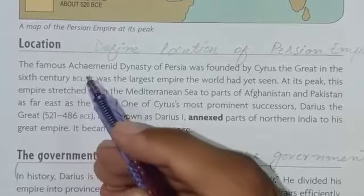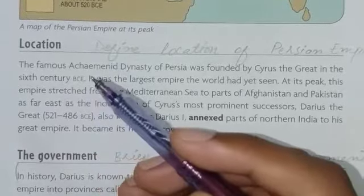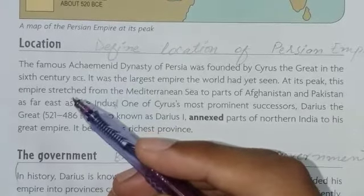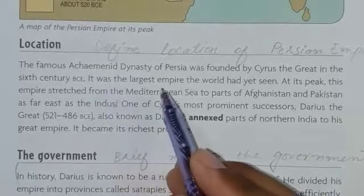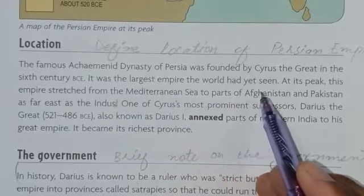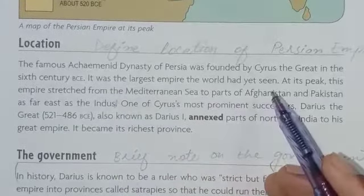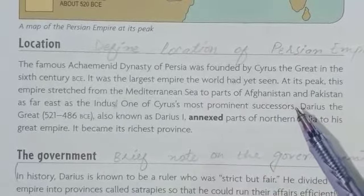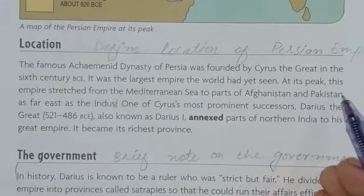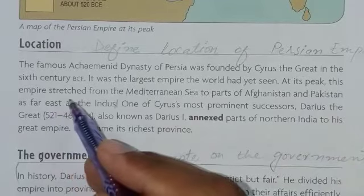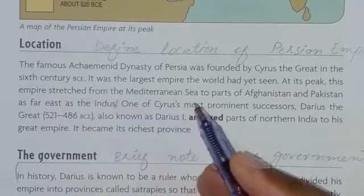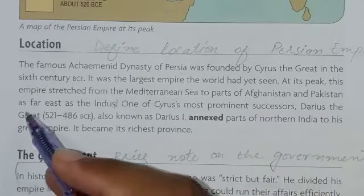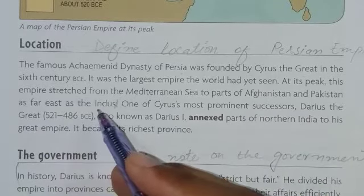Cyrus the Great founded the famous Achaemenid dynasty of Persia in the 6th century. It was the largest empire the world had yet seen. At its peak, this empire stretched from the Mediterranean Sea to parts of Afghanistan and Pakistan, as far east as the Indus.